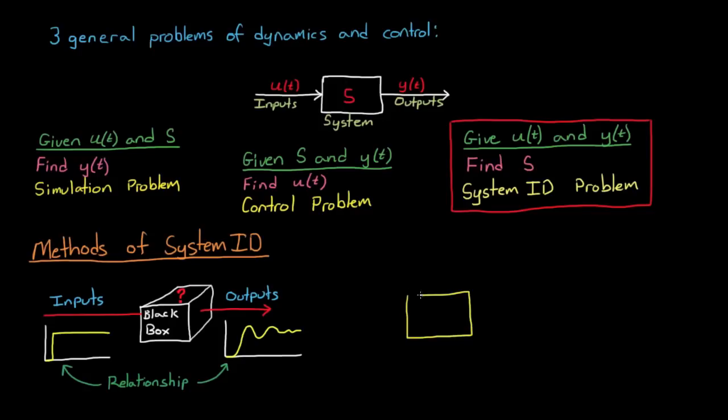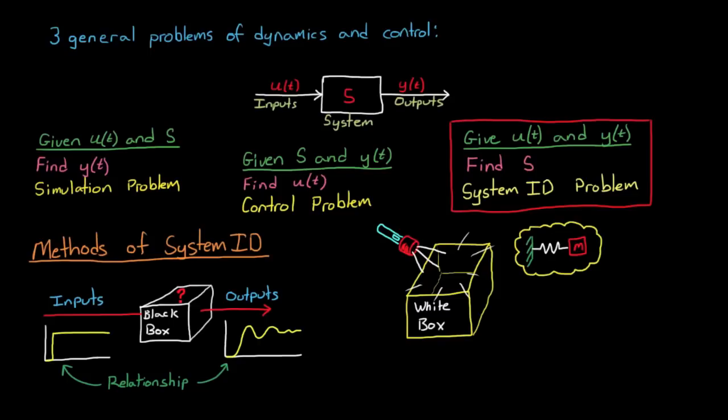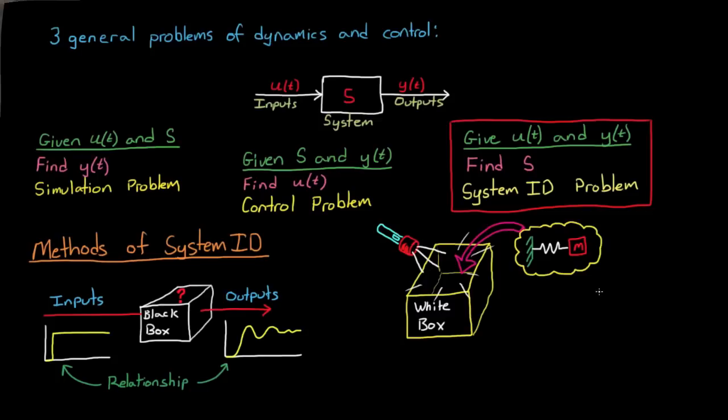Now, the second way to do system identification is referred to as the white box method. Imagine now you're able to shine a light into the box and see exactly what was in there. Knowing the components that make up the system, you could just write the differential equations directly. And this is exactly what you're doing when you're writing Newton's equations of motion or determining the equations of motion based on the energy in the system. But it's this white box method that we're going to start with in our example with the spring. So let's go back to it.